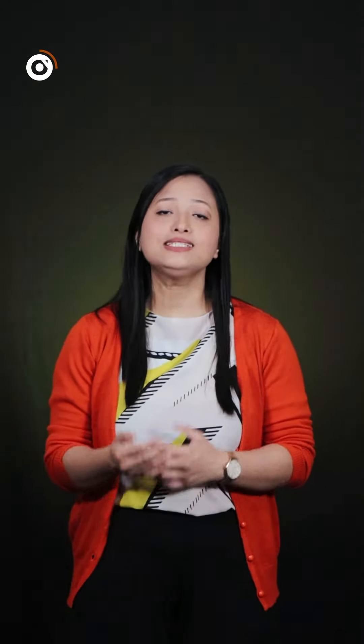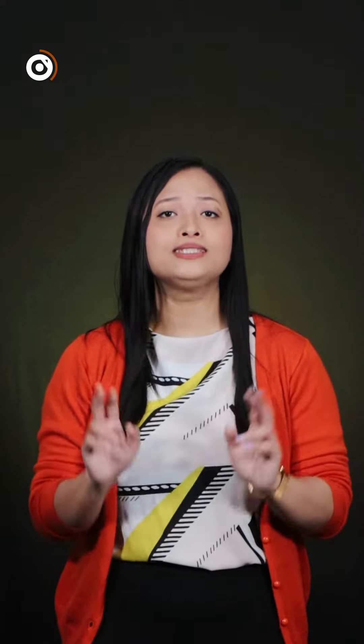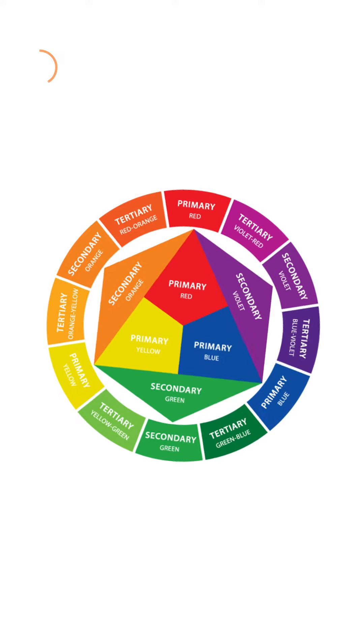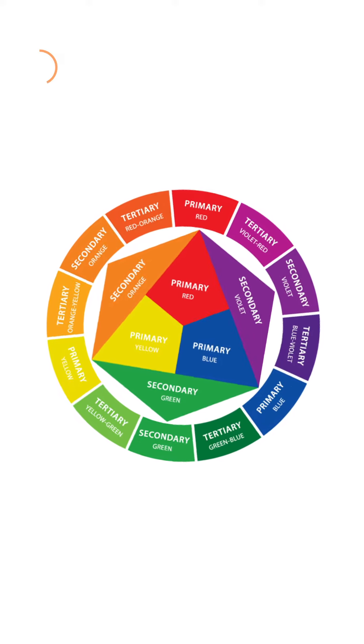They use something called color theory. It is a set of rules and principles which are based on how human beings perceive different colors. Firstly, it assembles all of the different colors into a simple geometry — this, the color wheel.